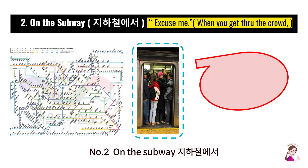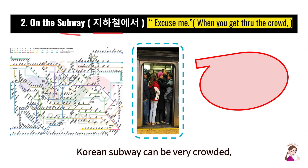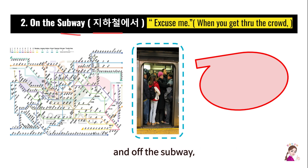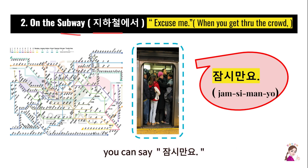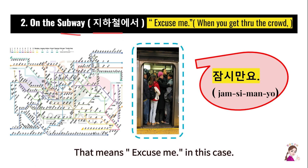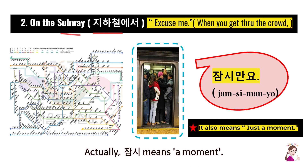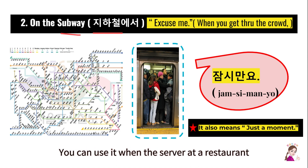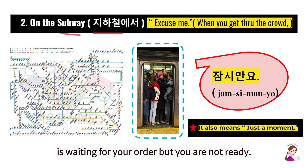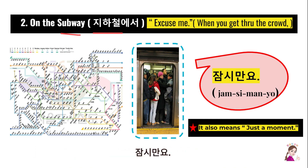Number 2. On the subway — 지하철에서. 지하철 means subway. Korean subways can be very crowded, especially during rush hours. When you need to get through the crowd and exit the subway, you can say: 잠시만요. That means 'excuse me' in this case. Actually, 잠시 means 'a moment,' so it literally means 'just a moment.' You can also use it when a server at a restaurant is waiting for your order but you are not ready. Repeat after me: 잠시만요. 잠시만요. Okay, good.